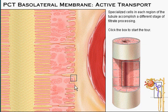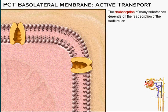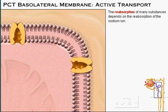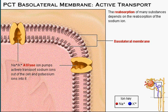Click the box on the basolateral membrane to start the tour. The reabsorption of many substances from the glomerular filtrate in the PCT depends directly or indirectly on the active reabsorption of the sodium ion. The cellular structure responsible for this process is the sodium-potassium ATPase ion pump, located in the basolateral membrane.